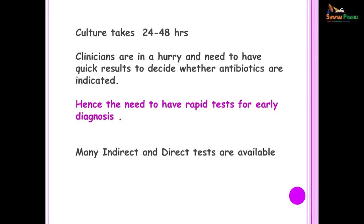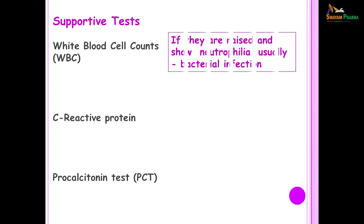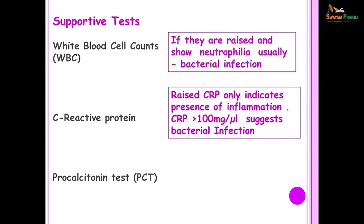As you know, culture takes 24 to 48 hours and clinicians are in a hurry as they need to start antibiotics and therefore they require quick results. Therefore, there is the need for rapid tests for an early diagnosis of disease. There are many direct and indirect tests which are available. The supportive tests include doing the WBC count. If these are raised and show neutrophilia, then you could usually think of this as a bacterial infection.